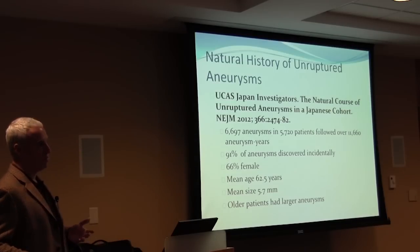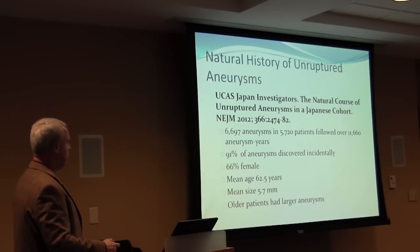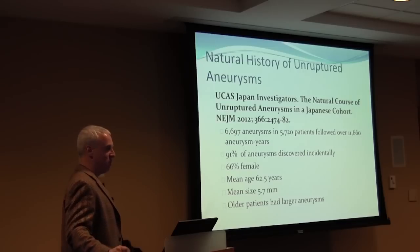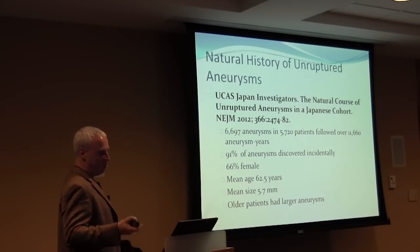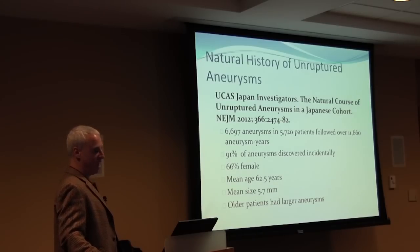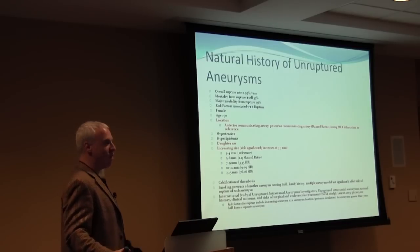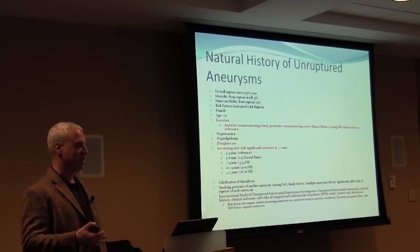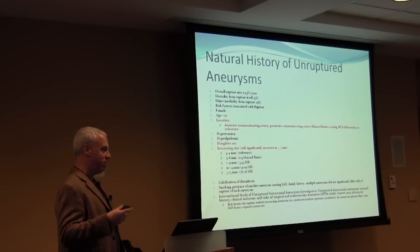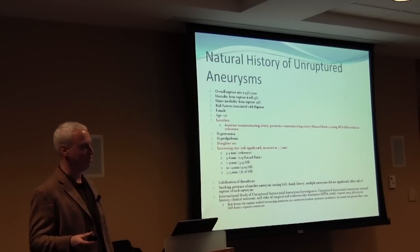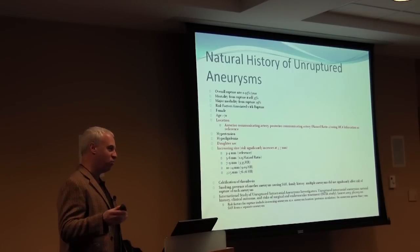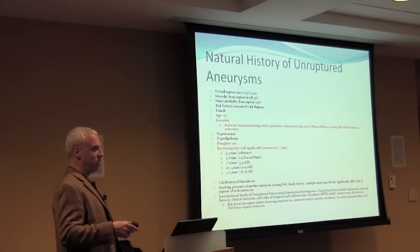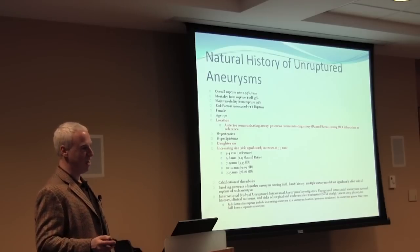What's the natural history of an aneurysm? In Japan, researchers looked at patients with aneurysms — 91% of which were discovered incidentally — and asked what happens with unruptured aneurysms. The overall rupture rate is about less than 1% per year, but that's cumulative. Roughly, if you have 20 more years of life and an aneurysm is found at age 60, you have about a 15% chance of it bleeding over those next 20 years. I tell people with an aneurysm that every 10 years they have about an 8% chance of it bleeding.